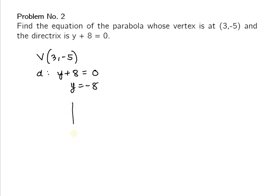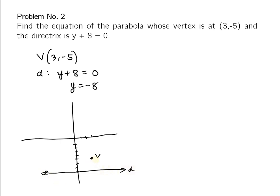We plot the vertex at (3, -5) and draw the directrix line at y = -8. Since the directrix is always outside the parabola and is below the vertex, the parabola opens upward.